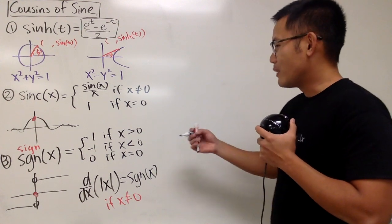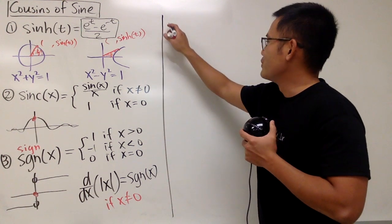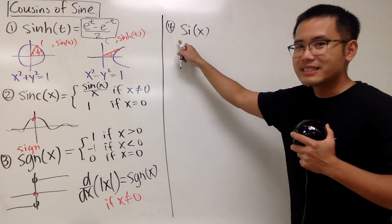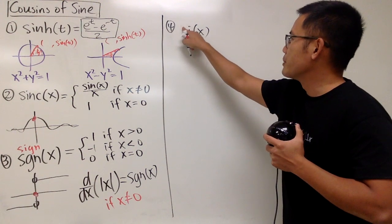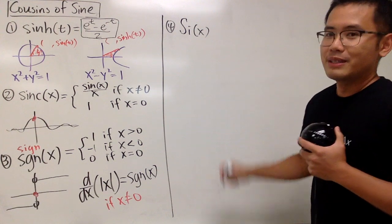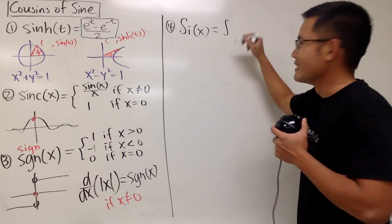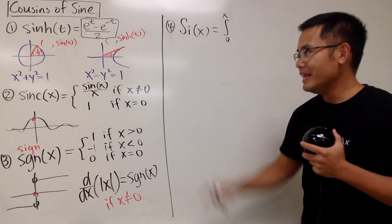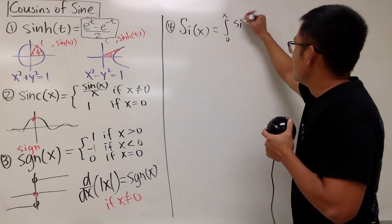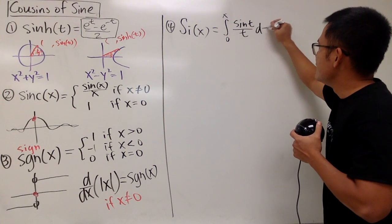Next, let's play around with the spelling — what if we just have S and I? The next one is really fun: we have Si(x), the capital S. This is called the sine integral of x. It is defined to be the integral from 0 to x of sine t over t, dt — using the dummy variable t so we don't reuse x.